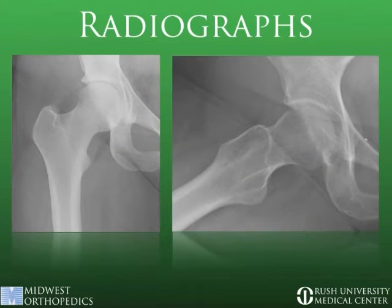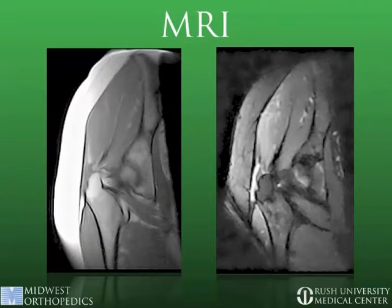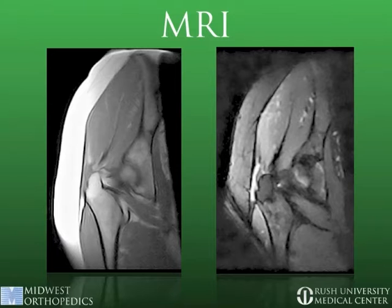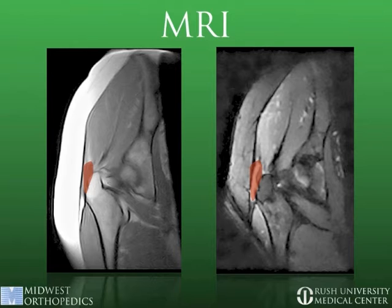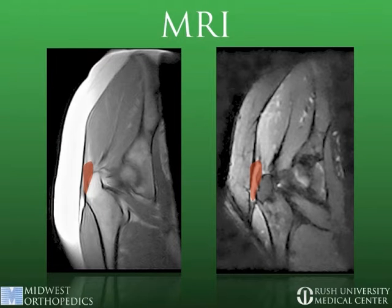Radiographs did not demonstrate arthritis, any avulsion fractures, or heterotopic ossification. MRI imaging was obtained to evaluate the quality of the abductor tendons. Axial sections did not show any fatty infiltration or atrophy; however, the coronal section seen here demonstrated fluid just lateral to the greater trochanter as well as a discontinuity proximal to the greater trochanter near the musculotendinous junction.